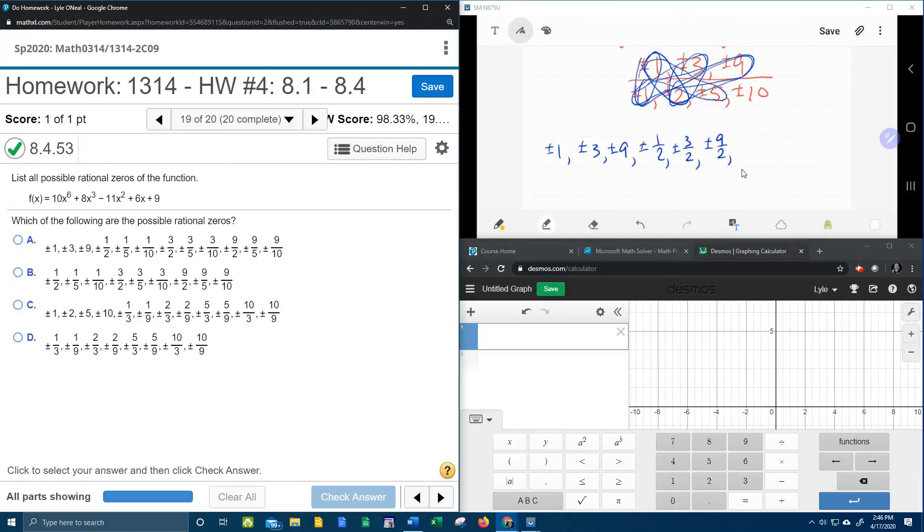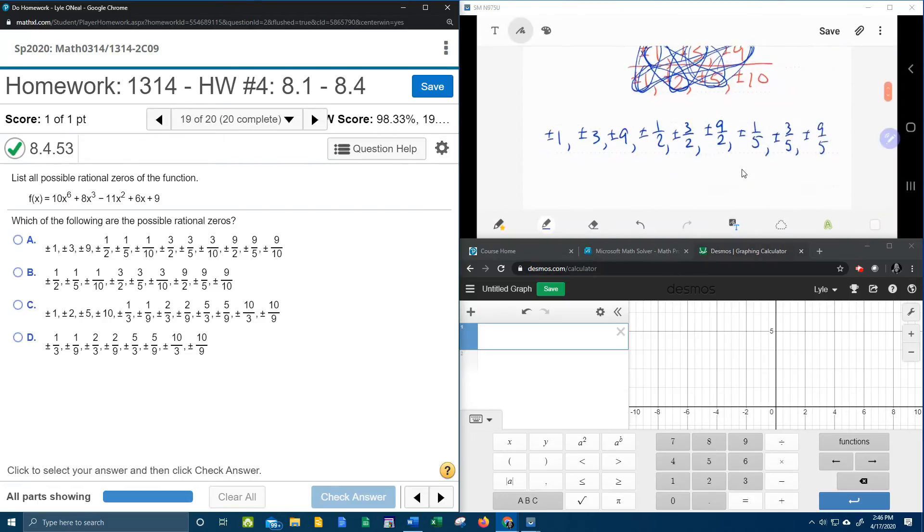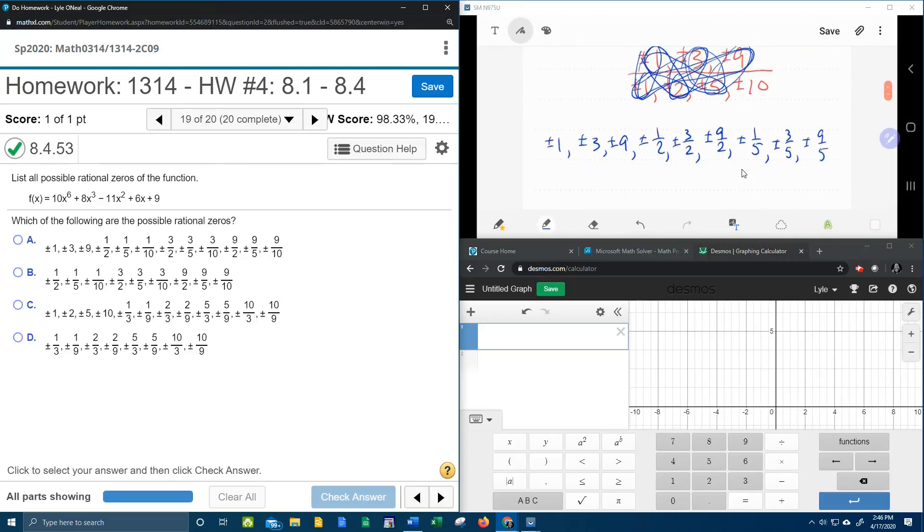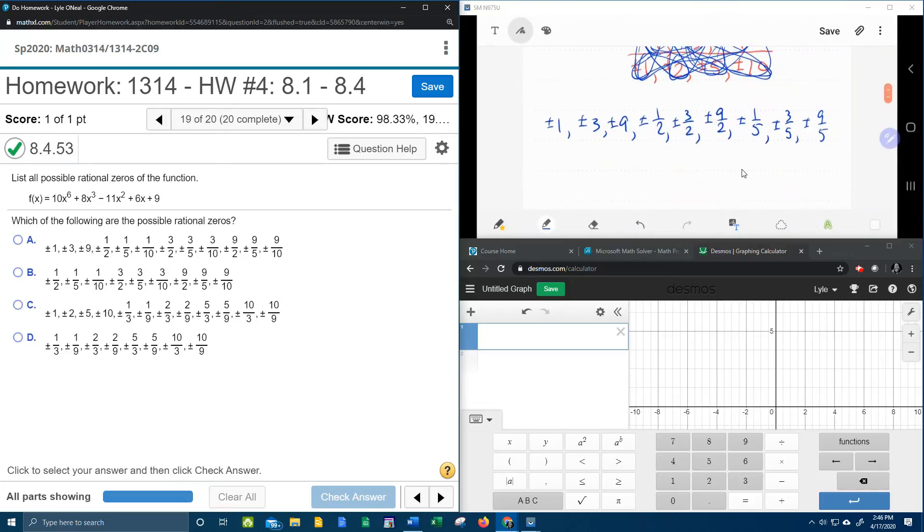So next, 1 fifth, 3 fifths, 9 fifths. 1 fifth, 3 fifths, 9 fifths. And I've run out of room, so we're going to have to go down the next line and do over 10. 1 tenths, 3 tenths, 9 tenths. Plus or minus 1 tenths, 3 tenths, 9 tenths. So there's a ton of these.